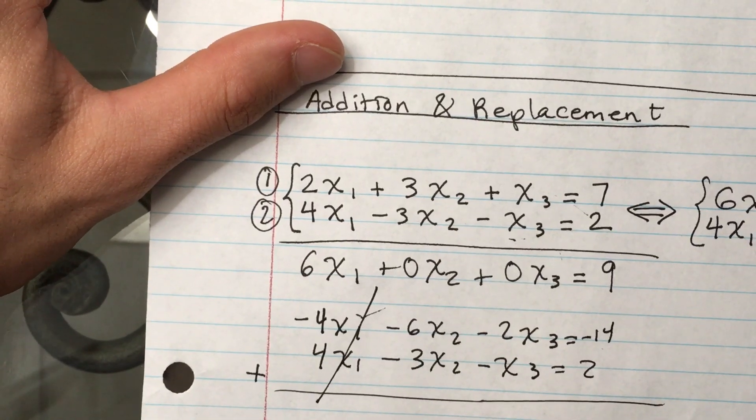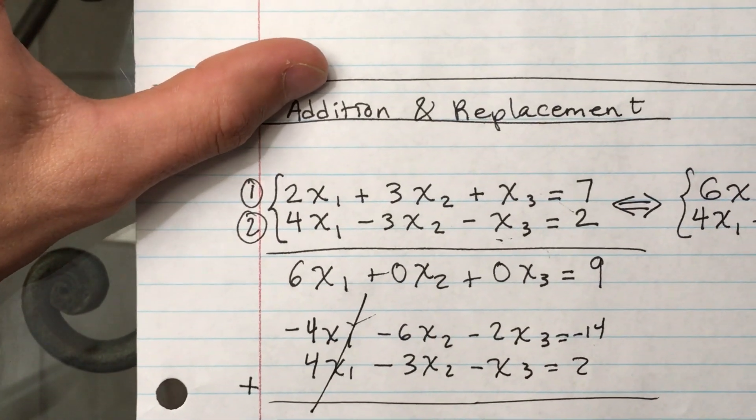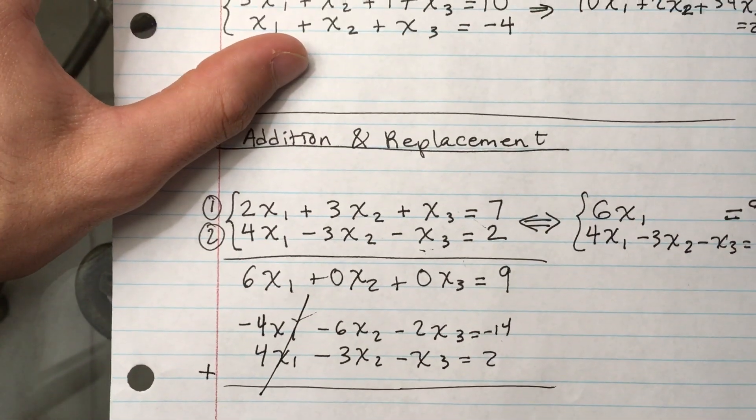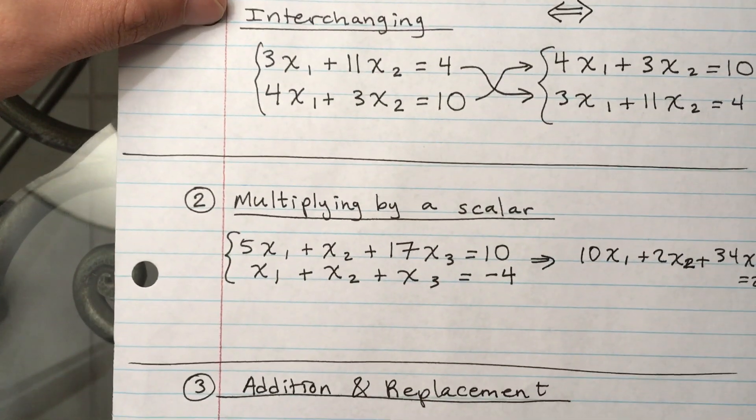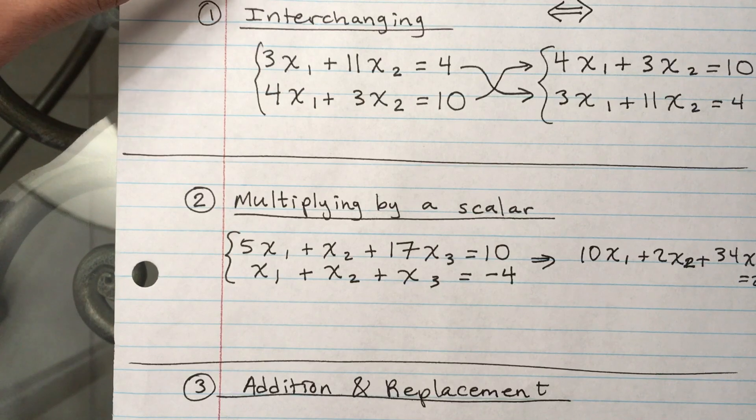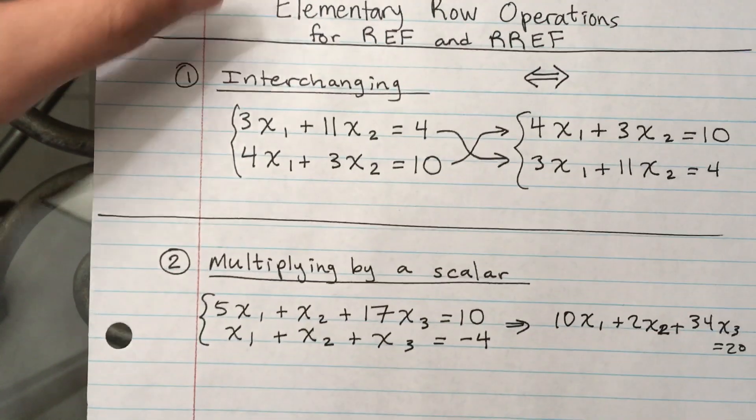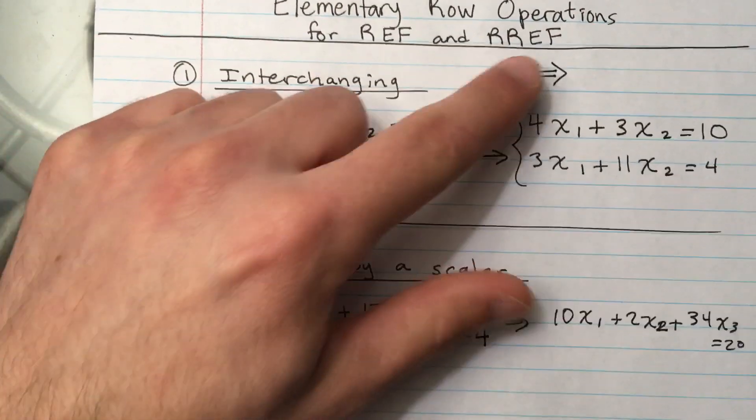And that would still be valid in terms of writing an equivalent system. These are three rules, and the main goal is to simplify the given system and rewrite it into REF or RREF form.